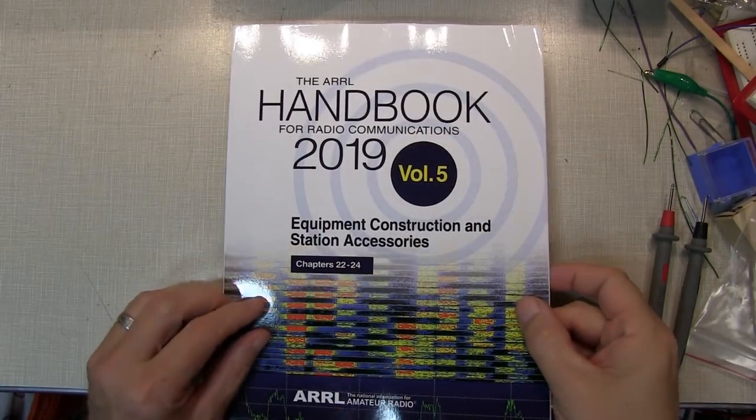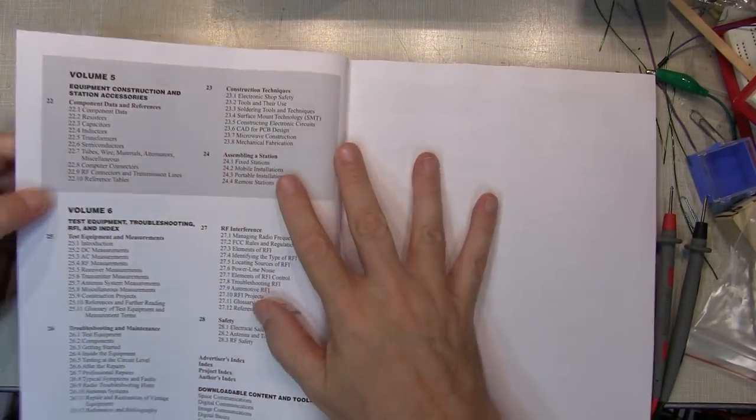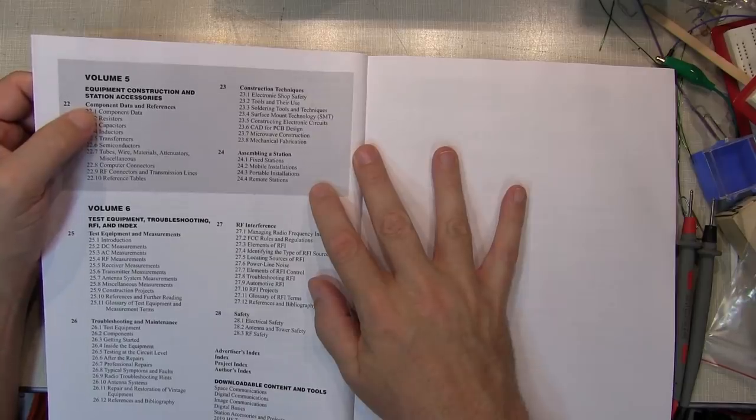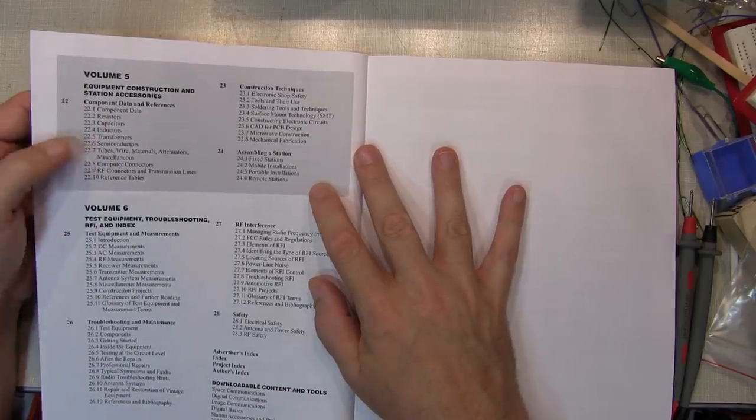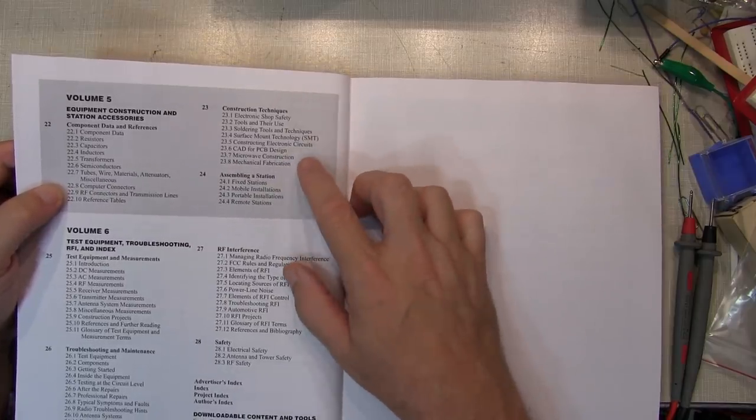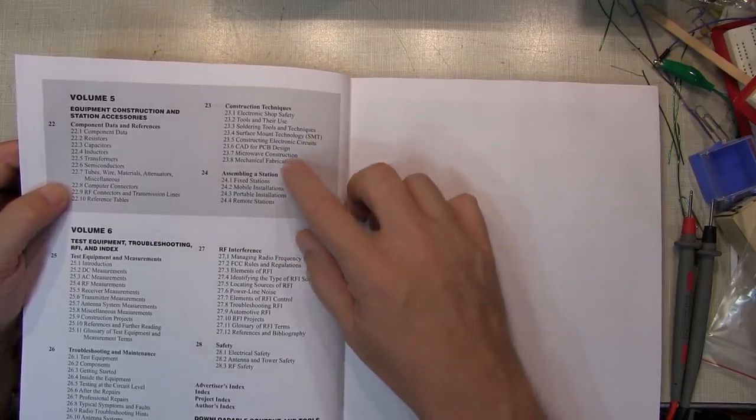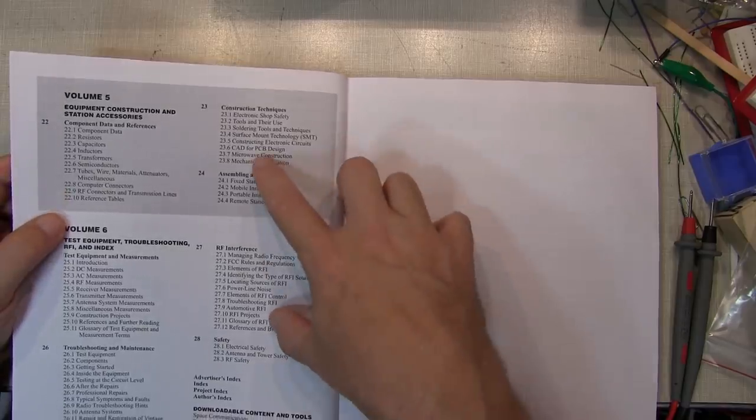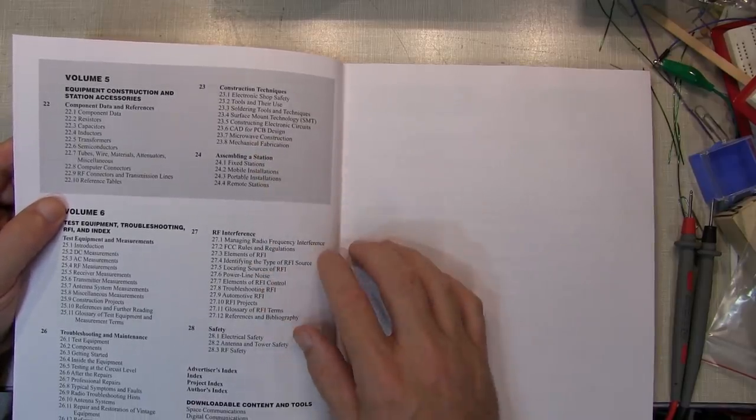Volume 5, which is Equipment, Construction, and Station Accessories, has chapters on component and data references for resistors, capacitors, transformers, etc. Construction techniques, how to build circuits, talking about surface mount technology and through-hole technology, PCB design, things like that, and assembling a station, how to put a station together efficiently.